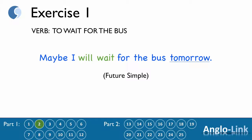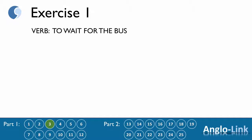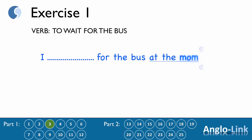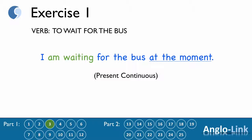Number 3: 'I ___ for the bus at the moment.' Answer: 'I am waiting for the bus at the moment.' Present continuous.